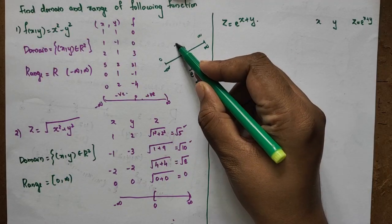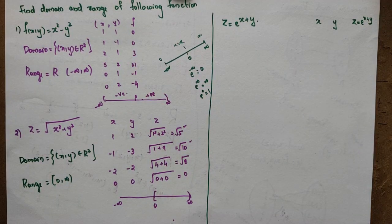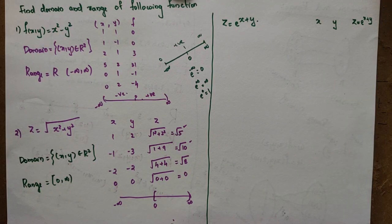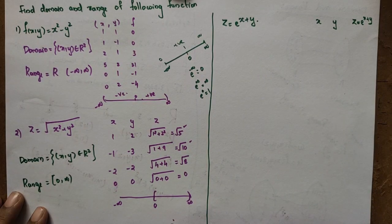The exponential function e raised to x plus y always gives a positive value. e raised to x squared is always positive. So e raised to x plus y is always a positive value — the exponential answer is always positive.